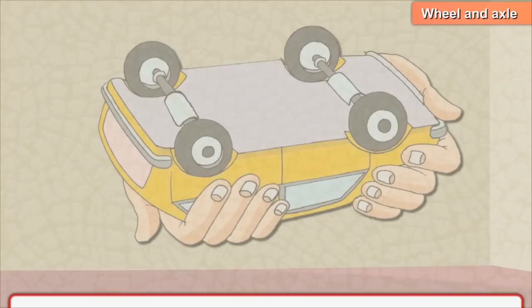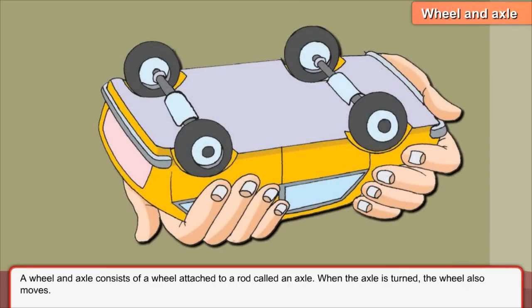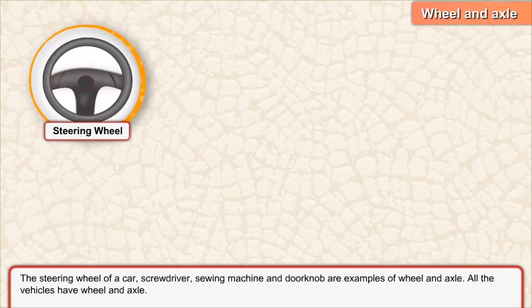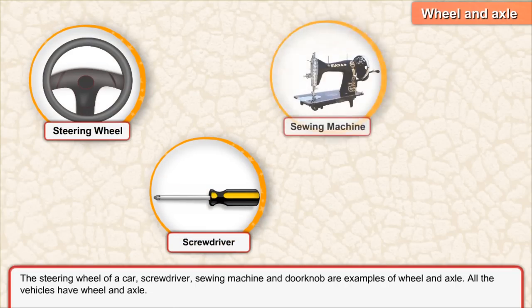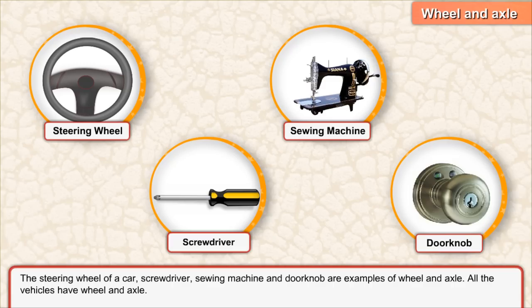Wheel and axle. A wheel and axle consists of a wheel attached to a rod called an axle. When the axle is turned, the wheel also moves. The steering wheel of a car, screwdriver, sewing machine, and doorknob are examples of wheel and axle. All vehicles have wheel and axle.